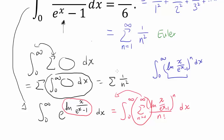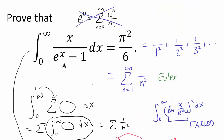But what have we learned from this attempt? We learned that maybe we can incorporate some kind of series into our integral, bring it outside, and then try to evaluate the integral that's left. So our plan is to try a different Taylor series — e to the u doesn't seem to work out — and whatever series we use, the resulting integral after switching sum and integral must be something we can actually evaluate from zero to infinity.